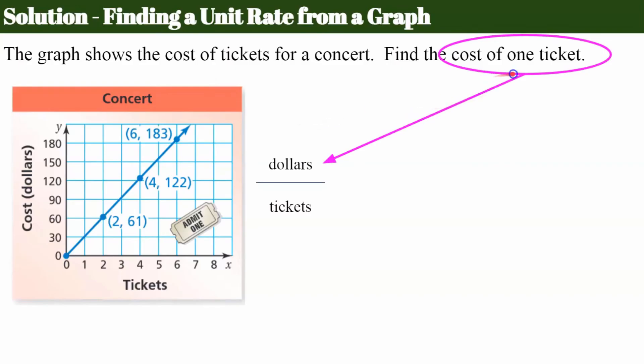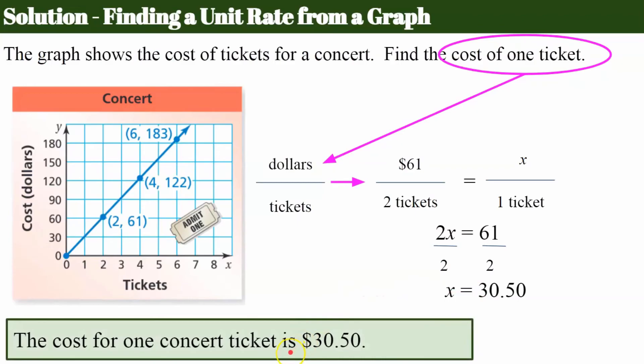We're going to do cost of one ticket, so dollars per ticket. And I'm going to almost always pick the smallest ordered pair closest to the origin because it's smaller numbers to work with. I know that it's $61 for two tickets, and that's equivalent to X dollars over one ticket. Use cross products property. Two times X is equal to 61 times one. Divide both sides by two, and we get that X is $30.50. So now I know that the cost for one concert ticket is $30.50.